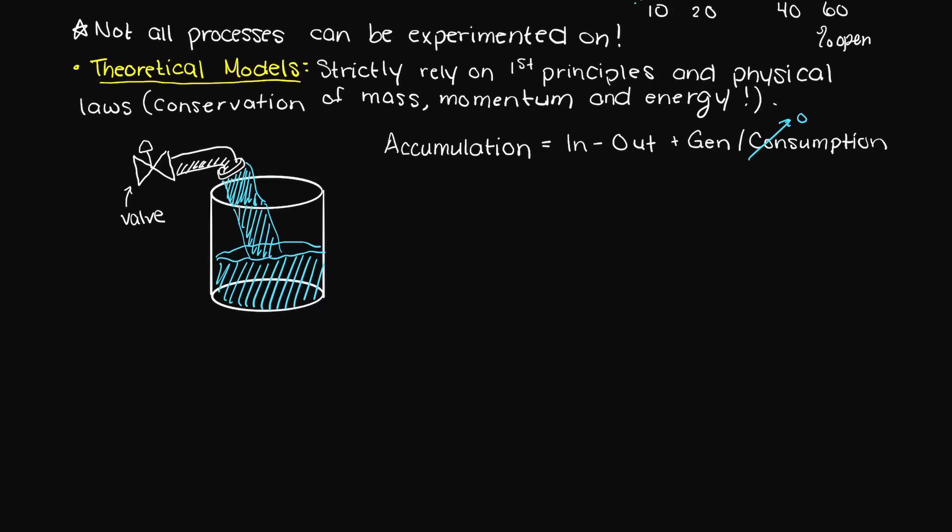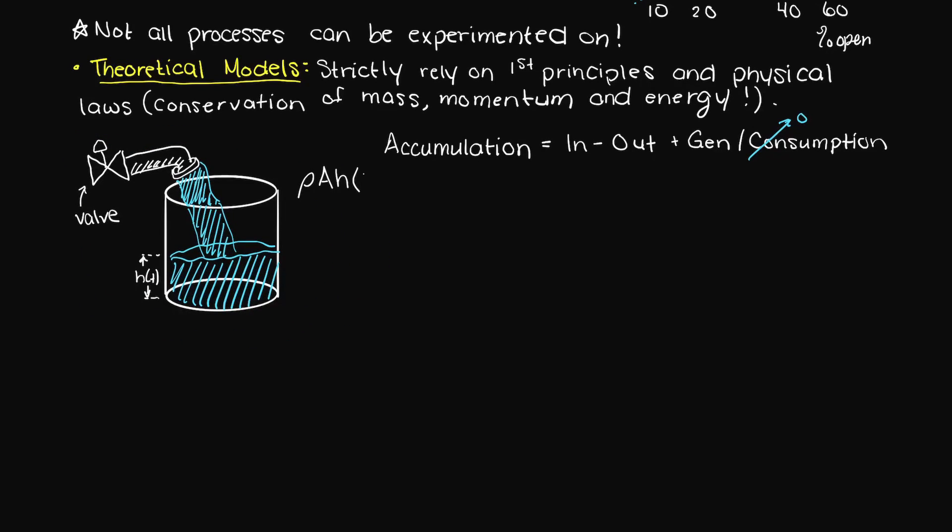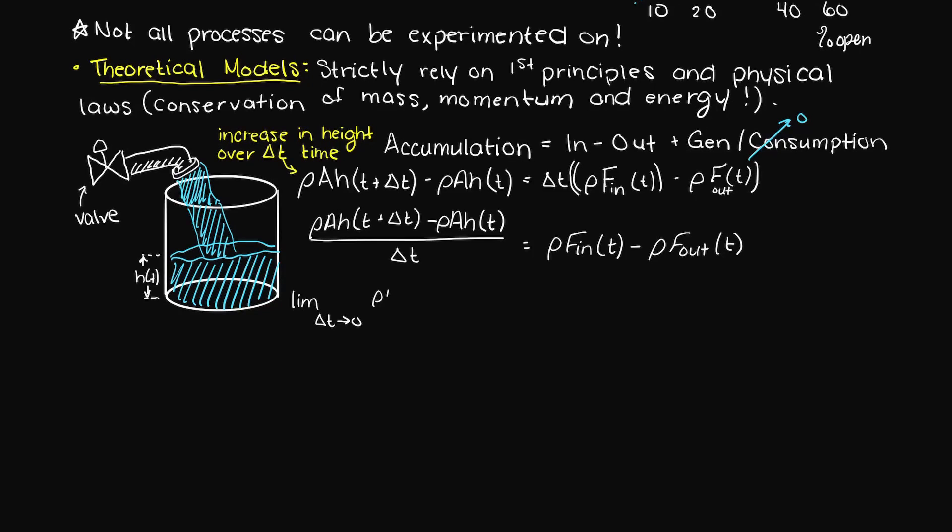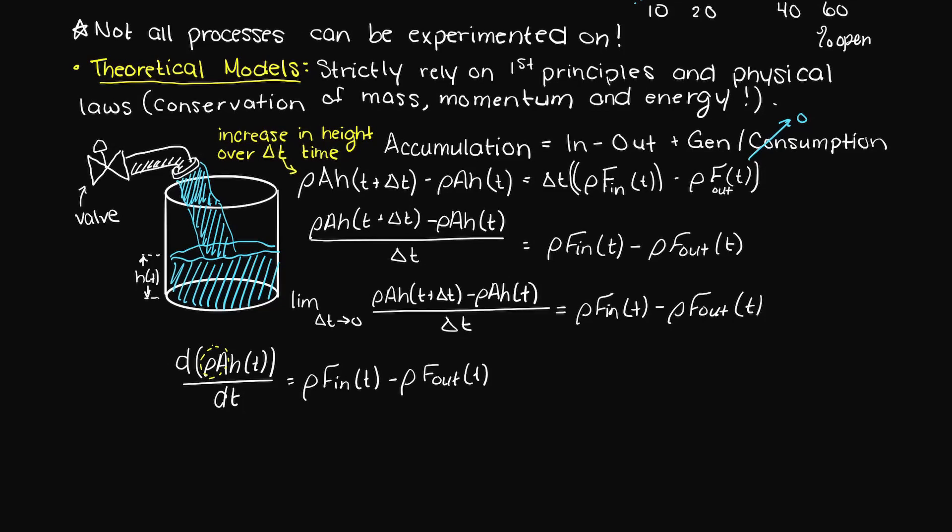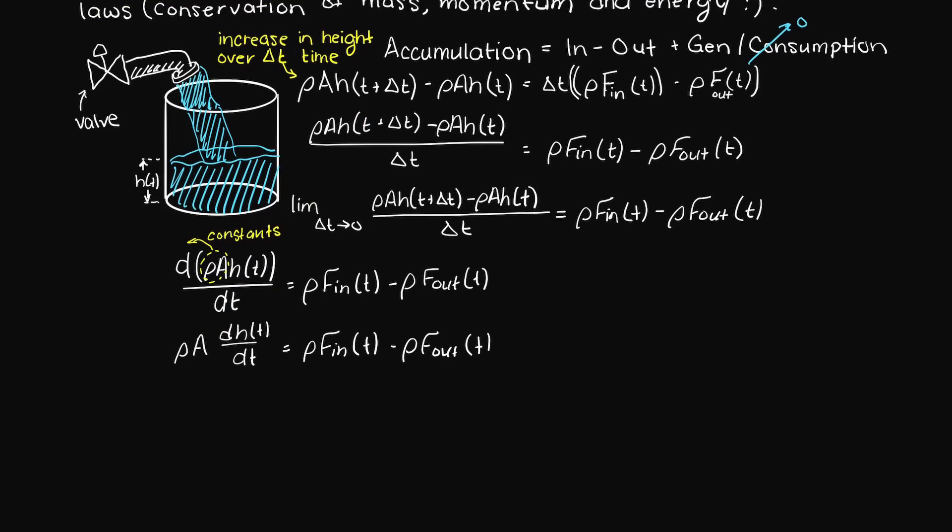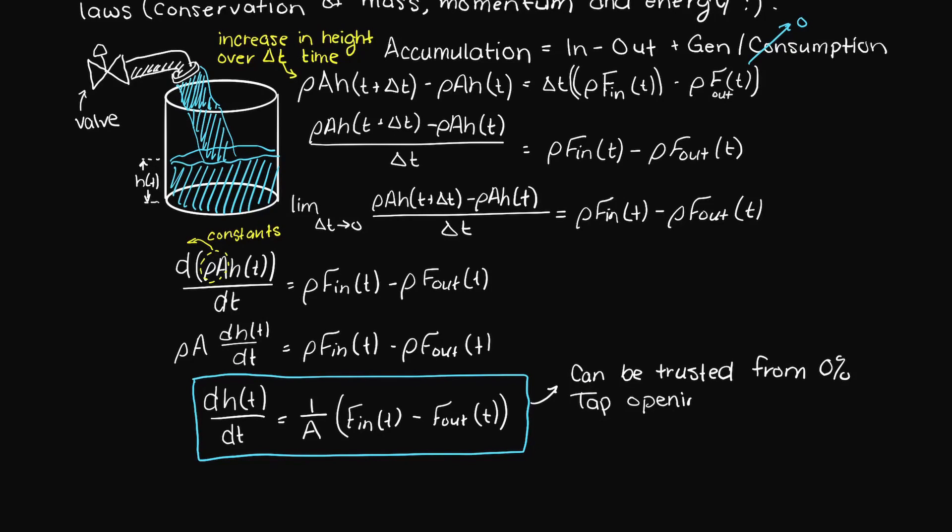However, because the math is derived straight from laws and principles that we know and trust, we can reliably use our data over any given input. So in our previous example, if we developed some theoretical model for the tap filling our bucket, we could trust our model from 0% to 100% tap opening. This type of process modeling is also excellent for trying different designs and operating conditions, whereas an empirical model would require much more work and experimentation.